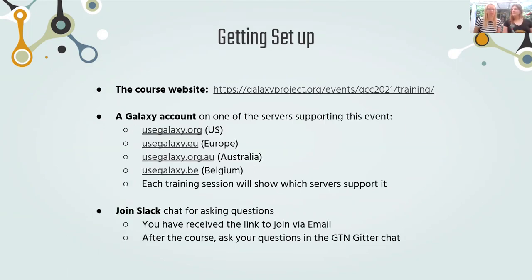To get started, you will need the following things. The course website to find the program and all the training sessions available for you to follow. The link is galaxyproject.org/events/GCC2021/training. The second thing you'll need is a Galaxy account. Please make an account on one of the following servers: Galaxy Main in the US at usegalaxy.org, the European Galaxy server at usegalaxy.eu, the Australian server at usegalaxy.org.au, and the Belgian server at usegalaxy.be. You can choose whichever one is closest to you — they should all work.